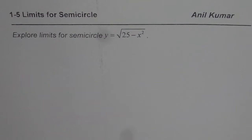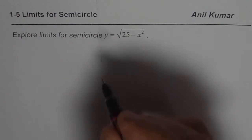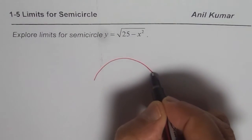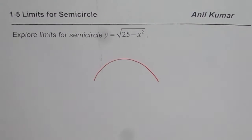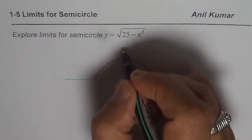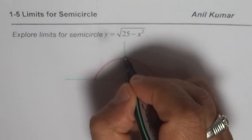I am Anil Kumar and now let us discuss limits concerning the function semicircle. So let me sketch one and then we will talk about it. So let us say this is the rising sum, our semicircle. Let me make x and y coordinates here, and that is what we have.